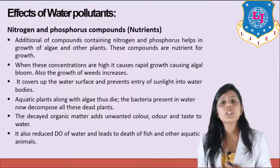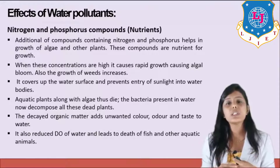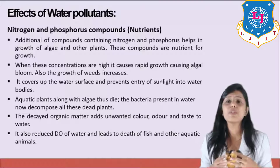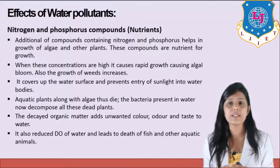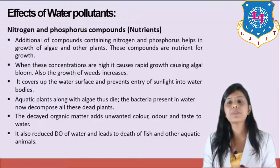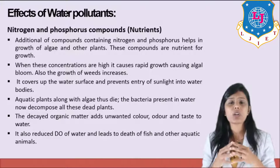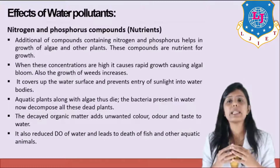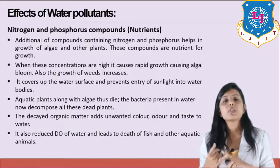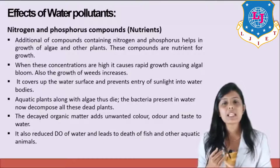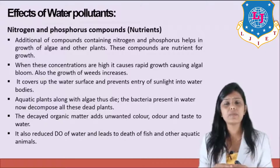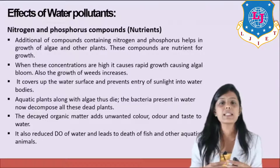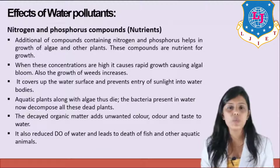Now, what is the effect of nitrogen and phosphate compounds? Addition of compounds containing nitrogen and phosphorus helps increase the growth of algae and other plants, as these compounds act as nutrients. When their concentration is high, it causes rapid growth, causing algal bloom. Growth of weeds also increases. Since algae is an unwanted plant not required in the water body, excessive nitrogen and phosphorus in water leads to its uncontrolled increase.